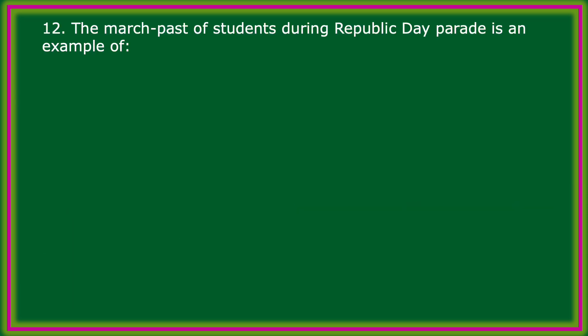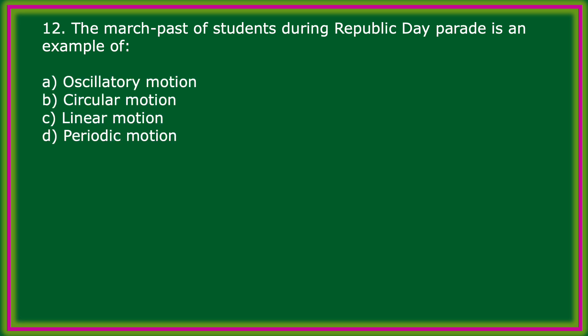The march of students during Republic Day Parade is an example of which type of motion? Options: oscillatory motion, circular motion, linear motion, periodic motion. The correct answer: linear motion.